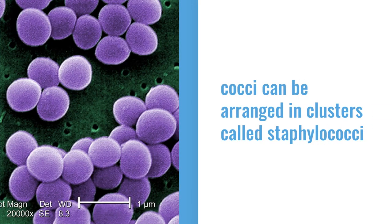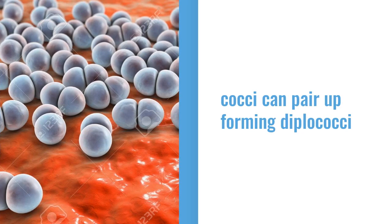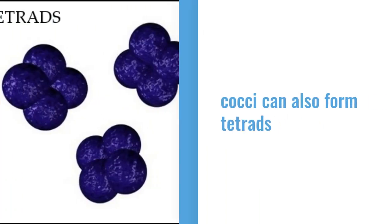Cocci can also be arranged in grape-like clusters, and those are called staphylococci, so staphylo for grape-like cluster. Cocci can also form pairs, and they would be called diplococci, diplo for two. Occasionally, cocci will form tetrads, which are little packets of four, and we'll note that on the report.